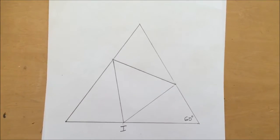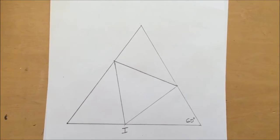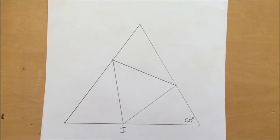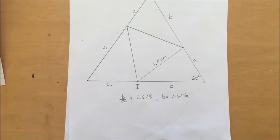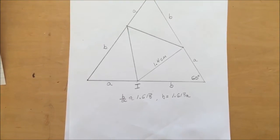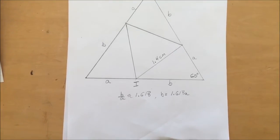I measured the edge of the icosahedron die at 1.4 centimeters. Vertex I cuts the segment at the golden ratio. So B over A is approximately equal to 1.618.